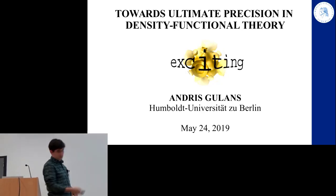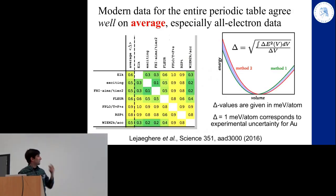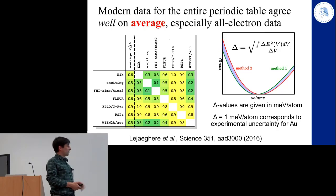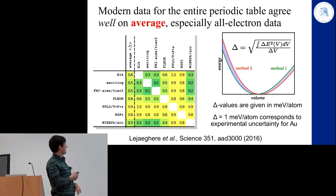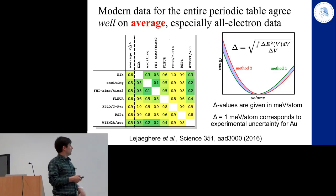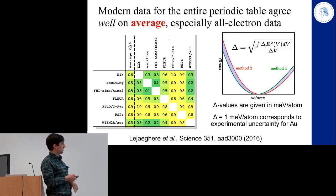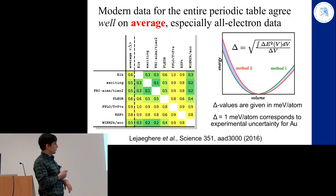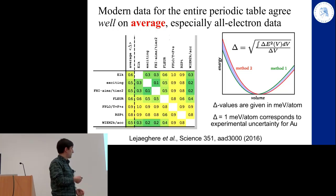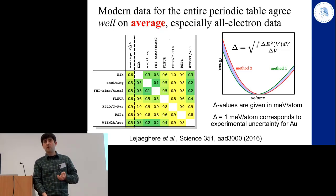I'll be talking about ultimate precision, starting with the conclusions of the reproducibility initiative paper. The conclusion is that all data in the entire periodic table agree quite well on average, especially for all-electron data. This discussion was based on the delta tests, and one reasoning for this conclusion is that most results fit within one millivolt per atom, which corresponds to experimental uncertainty for gold.